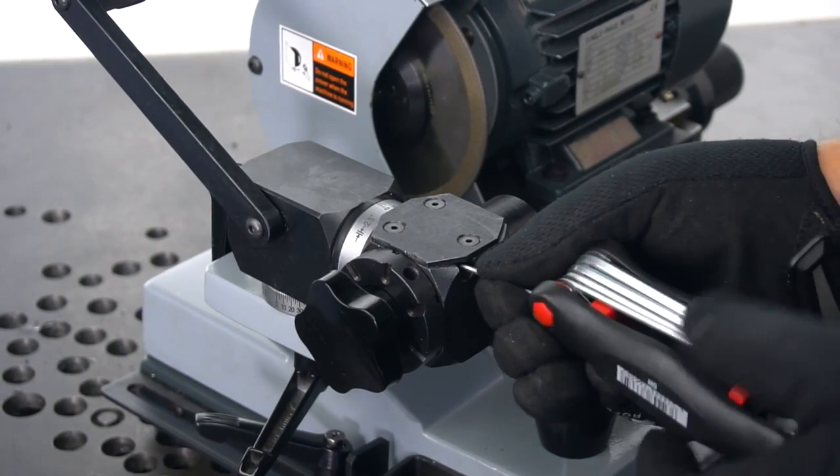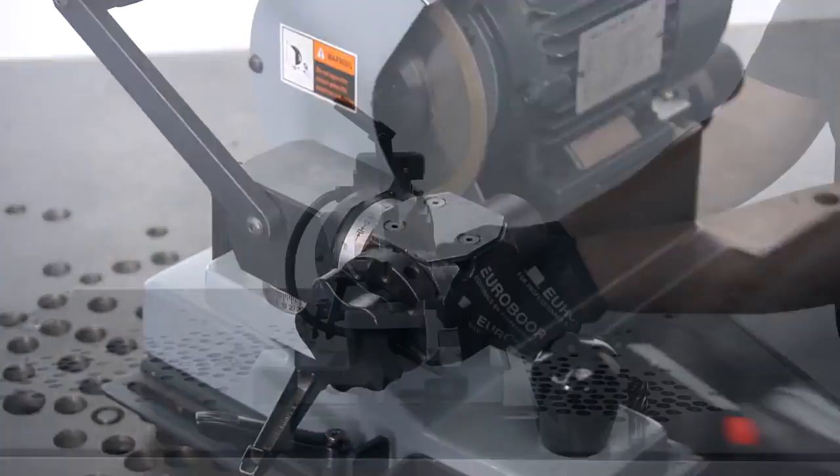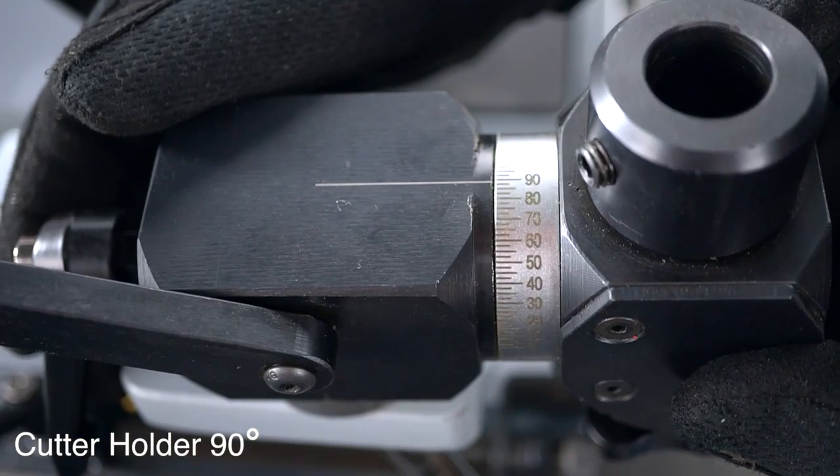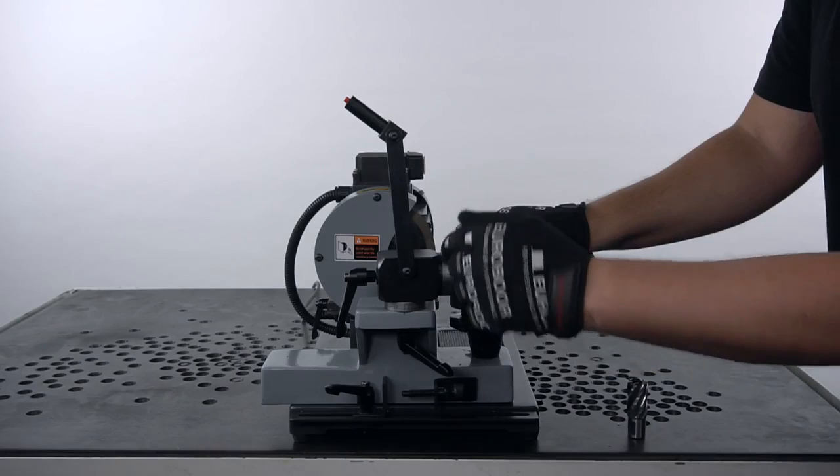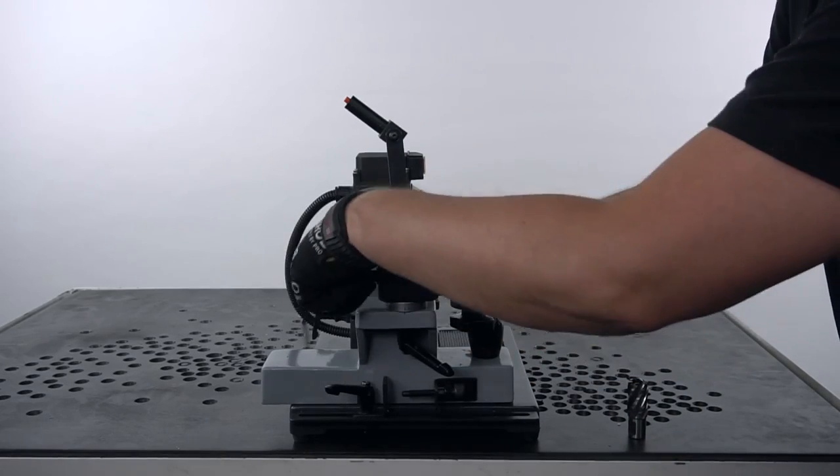And lastly, unlock the bolt inside the cutter holder in a counter clockwise direction. Next, position the cutter holder at 90 degrees. You can see that on the scale beside the cutter holder. Tighten it with the lever on the back.